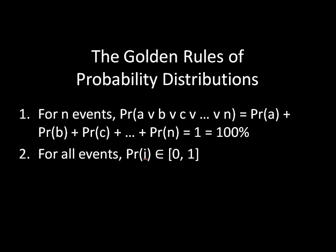And the other one's a bit more straightforward. It's that for any individual event, whether it's A, B, C, regardless of the name of it, the probability of that event happening must be no less than 0 and no greater than 1.